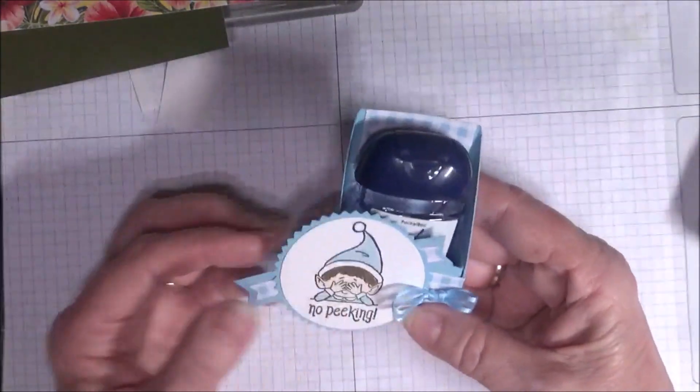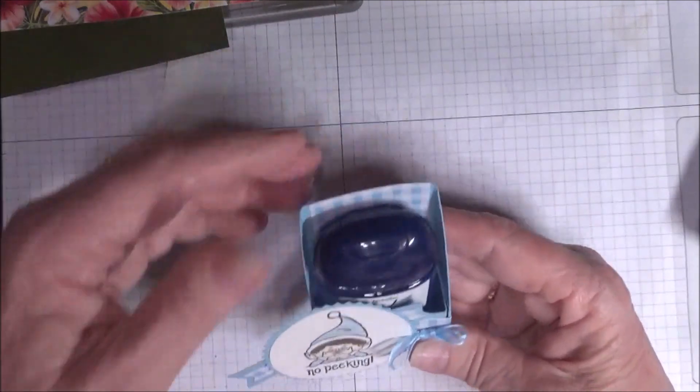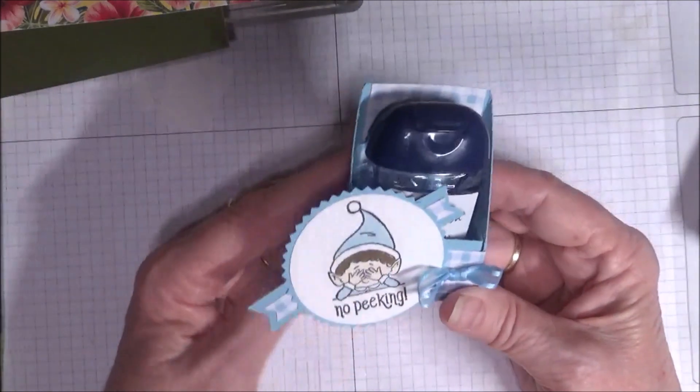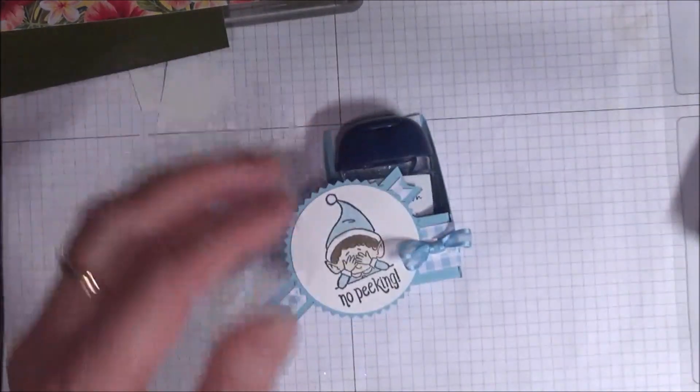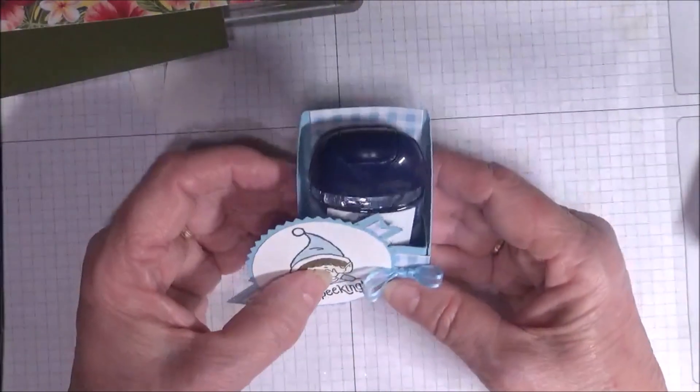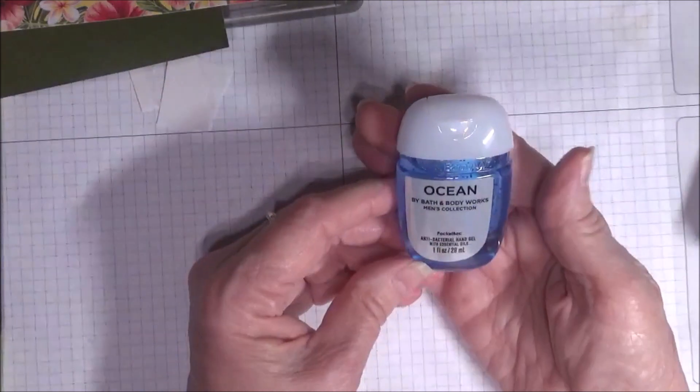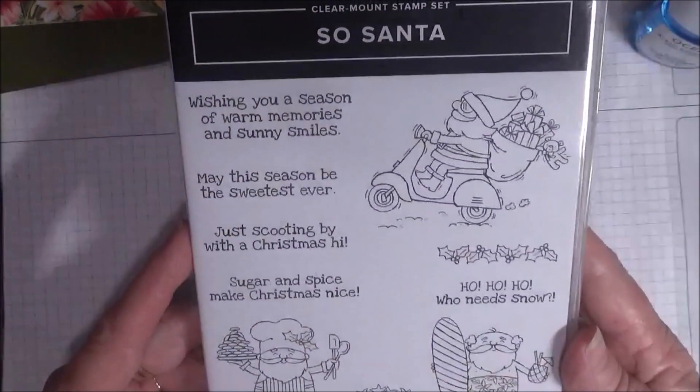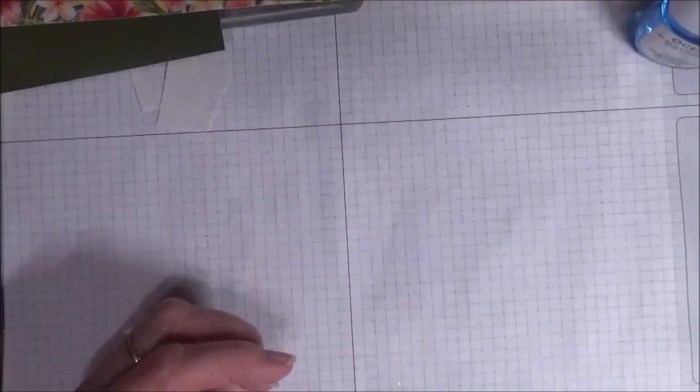This one is called Gingham. So I used some of our retired DSP from the Gingham Gala that was out a couple years ago, and I also used the retired stamp set hashtag Elfie. One of the other scents that I got was called Ocean. So I wanted to do something kind of tropical with it and pair it with the retired stamp set called Sew Santa. That's the one I'm going to show you today.